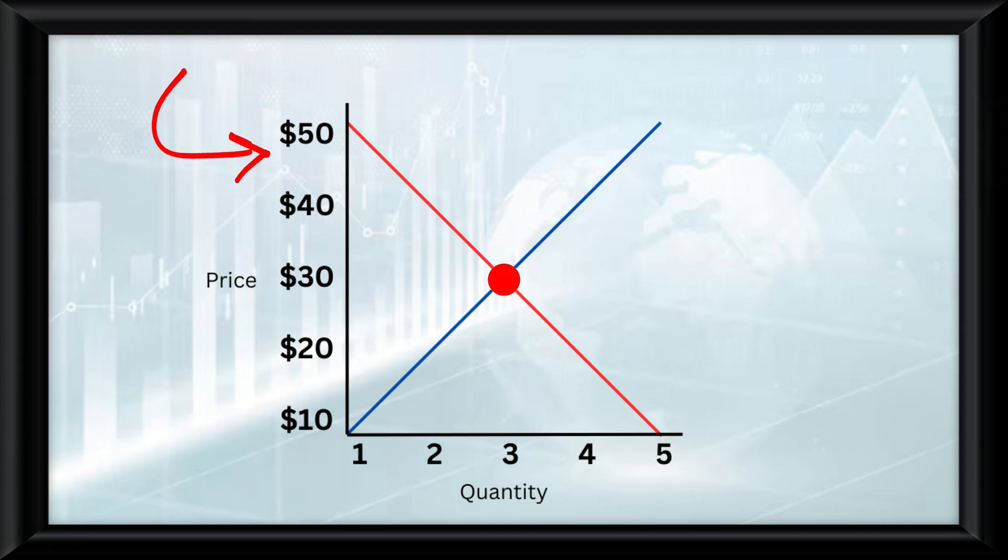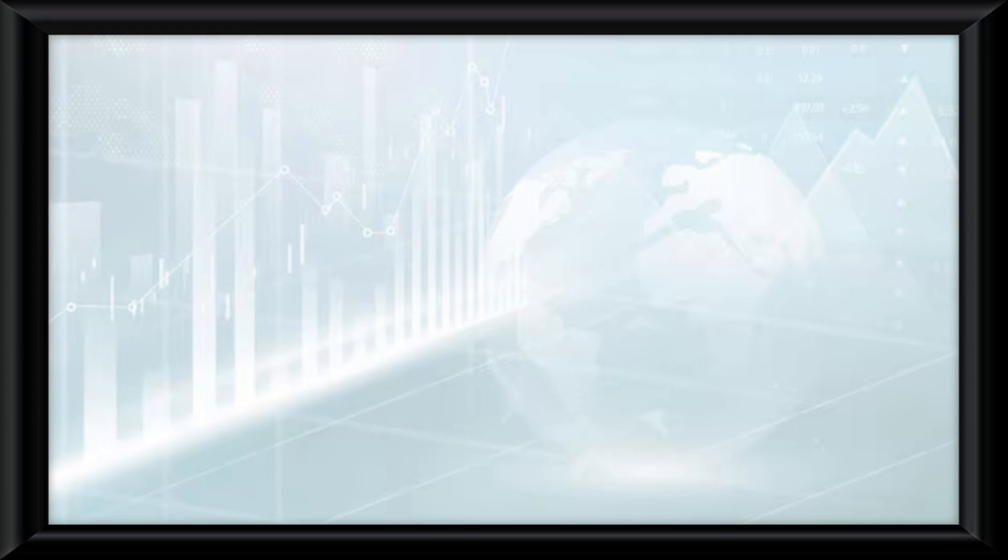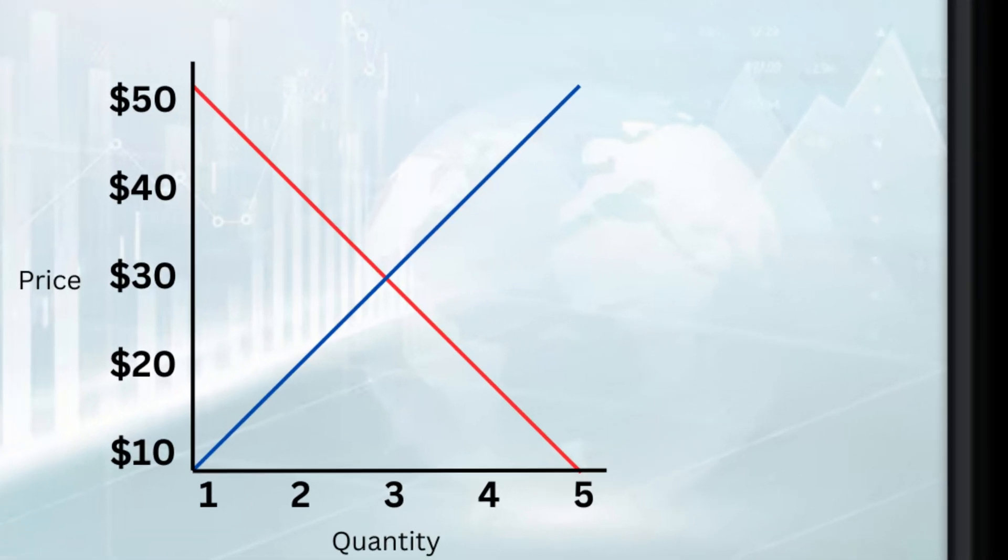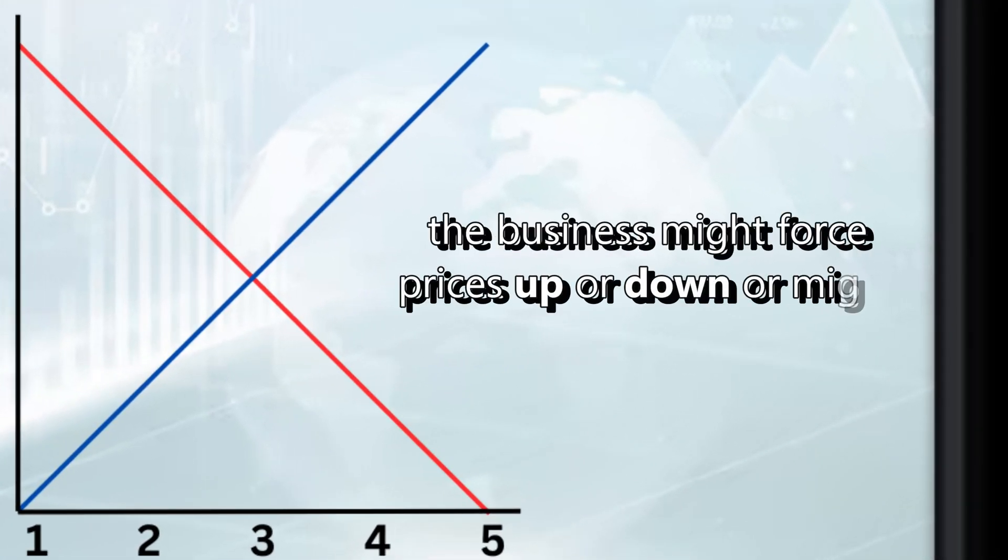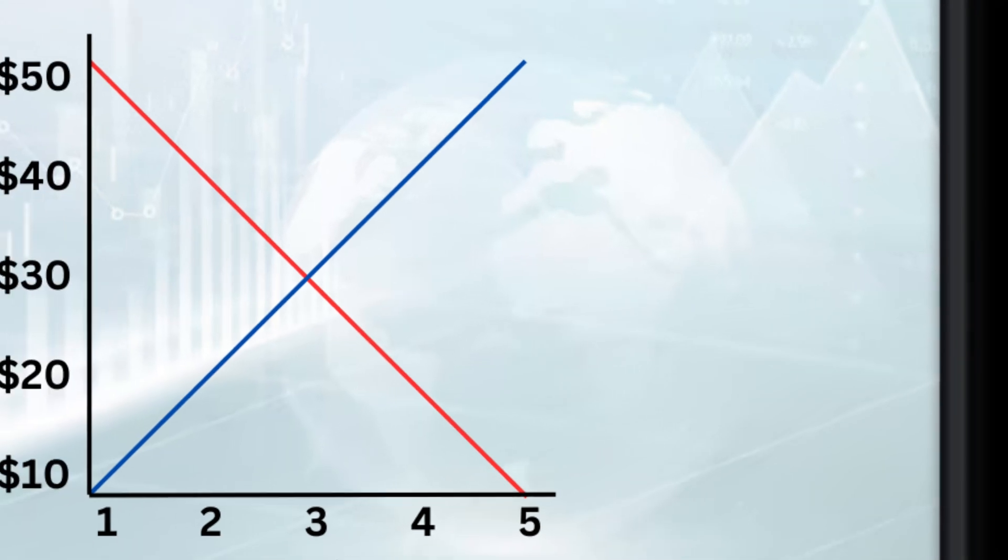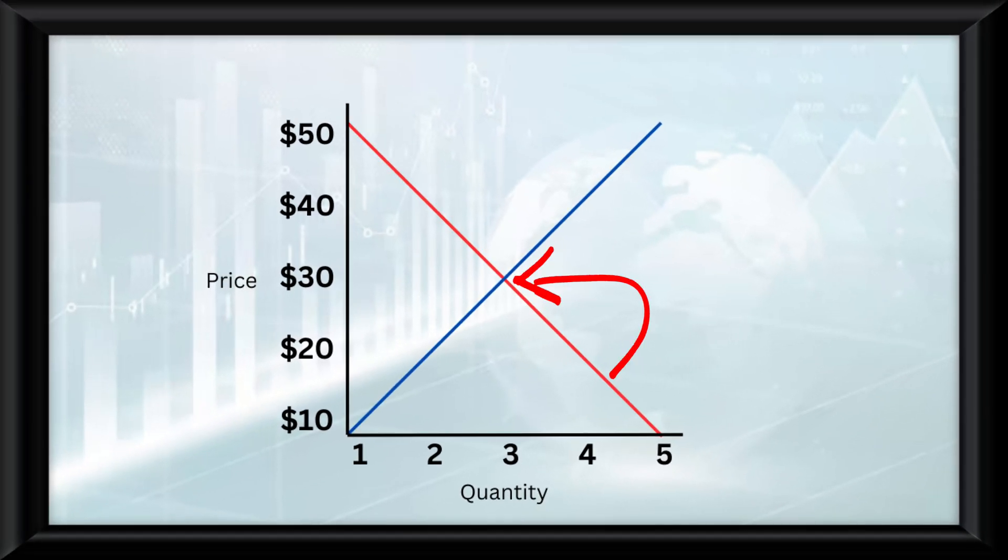Surplus happens when the price goes up, meaning the quantity demanded will decrease and the quantity supplied increases. A shortage happens when the price goes down, making the quantity demanded increase and the quantity supplied decrease. Understand that the only goal in the business world is to get a business to be at this equilibrium point. This would mean the business might force prices up or down, or might do the same to quantity just to make the graph fall on the equilibrium point.